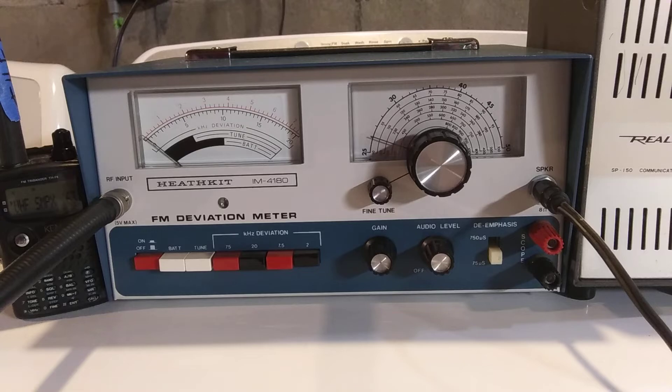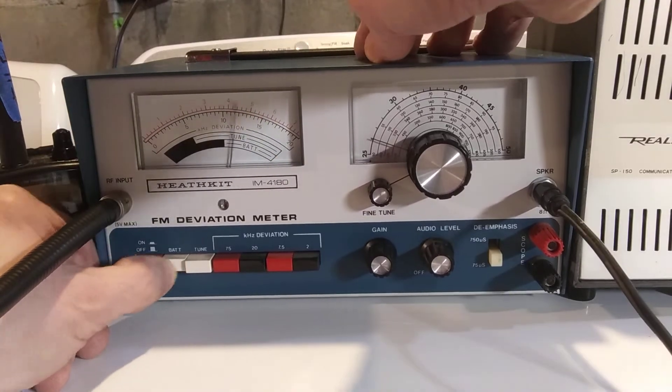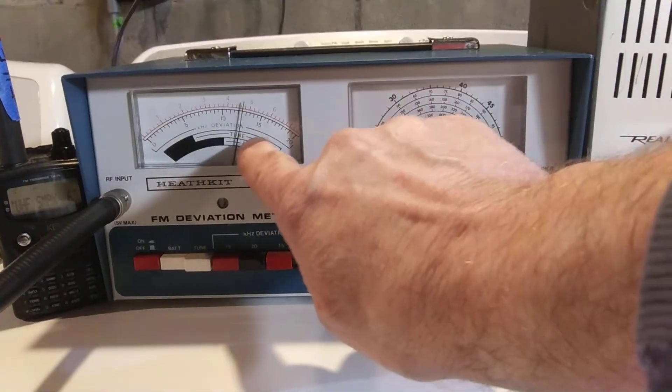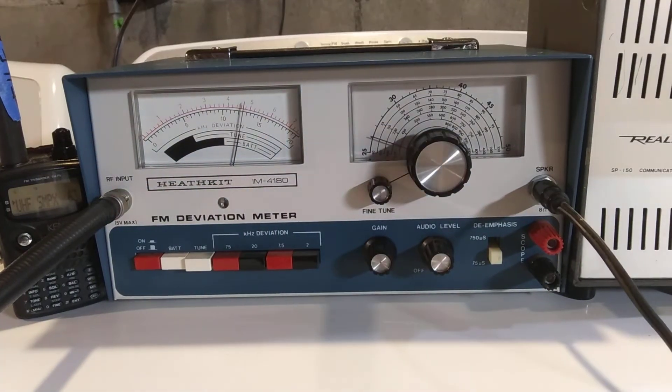Next thing you do is the next button over, which is the battery check. And the bottom right-hand scale is the battery. If it's in the white, it's in the good range.